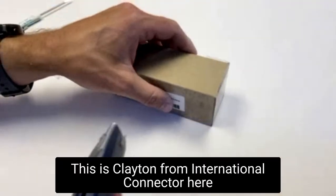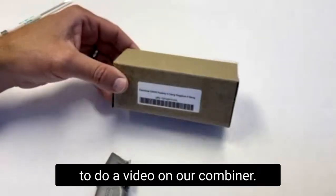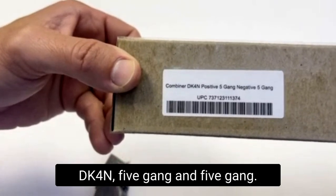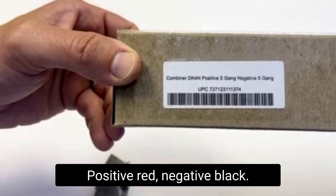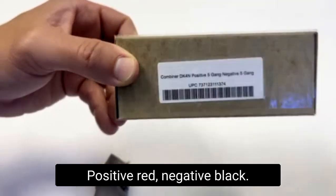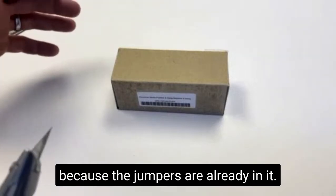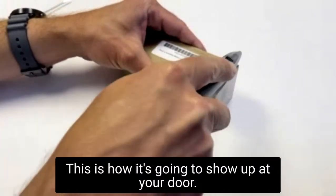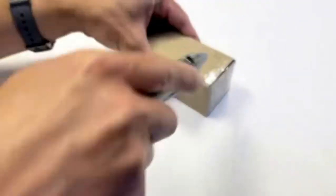Hi everybody, this is Clayton from International Connector here to do a video on our combiner DK4N five gang, five gang positive red, negative black. We call this a combiner because the jumpers are already in it. Let's just unbox it. This is how it's going to show up at your door. Let's get this open.